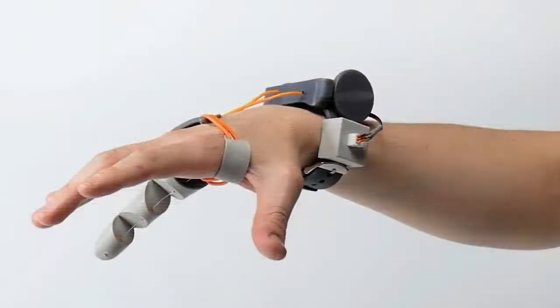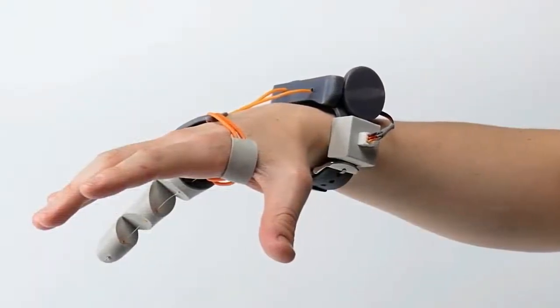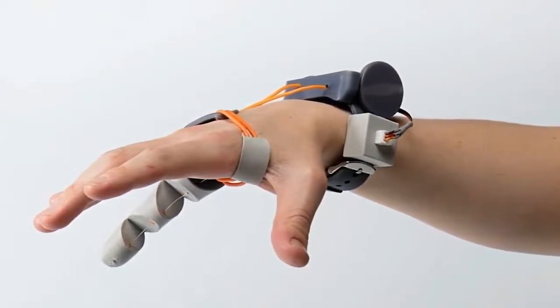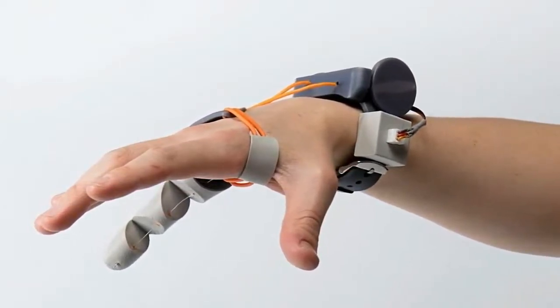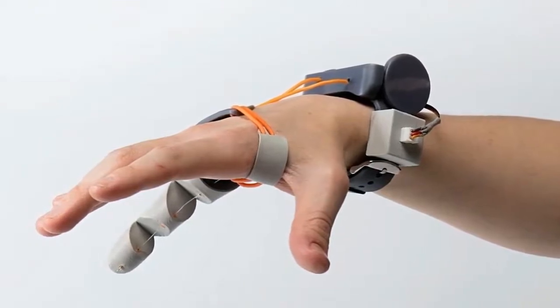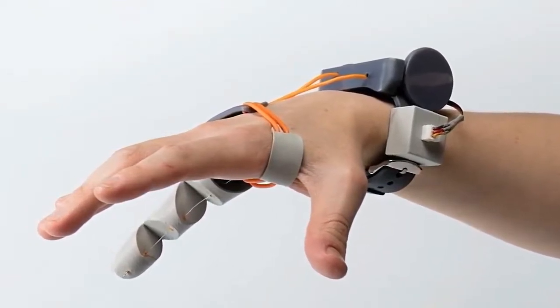The thumb is motorized and connected by cables to a bracelet. Pressure sensors underneath the wearer's feet connect to the thumb's motors via Bluetooth. Working the extra digit just requires you to press down with your foot.